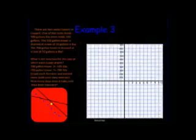Moving on to our last and final example, the hardest of them all. There are two water towers in Capelle. One of the tanks holds 500 gallons and the other holds 700. The 500 gallon tower is drained at a rate of 10 gallons a day. The 700 gallon tower is drained at a rate of 50 gallons a day.